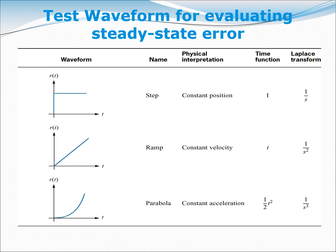This table shows several test waveforms or inputs R(t) used to evaluate the steady state error. The first row shows the unit step waveform or unit step input. If you do the Laplace transform of the unit step, you will get one over s.